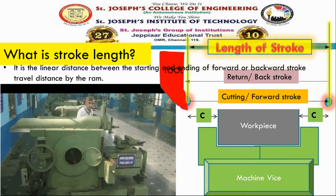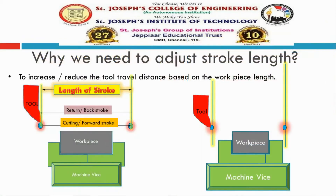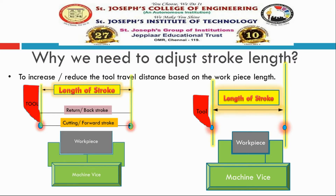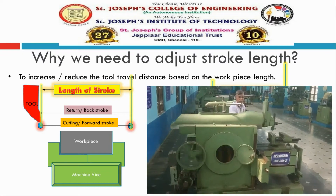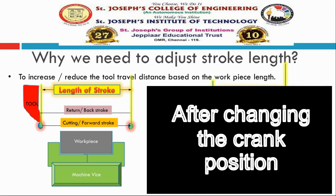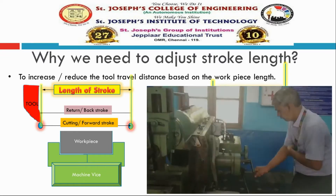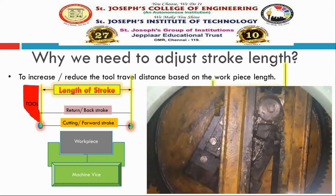We need to adjust the stroke length based on the length of the workpiece. Actually, the maximum and minimum stroke length is one of the important specifications of a shaping machine. We need to check this parameter when we are going to buy a shaping machine.